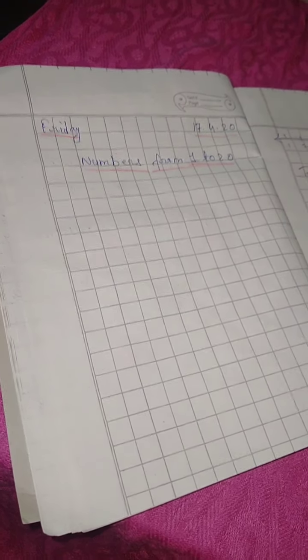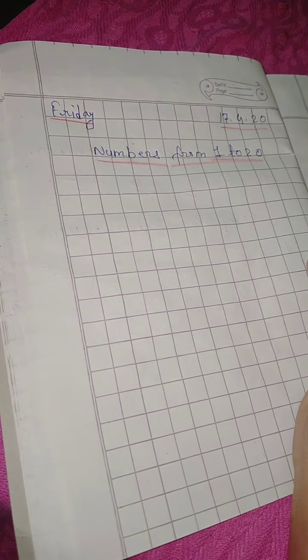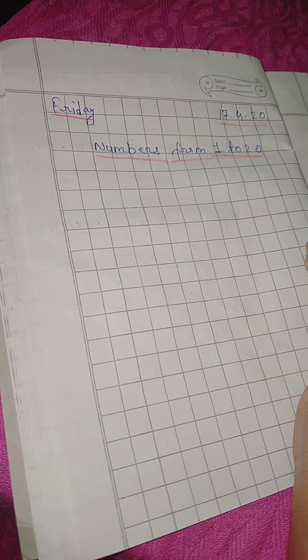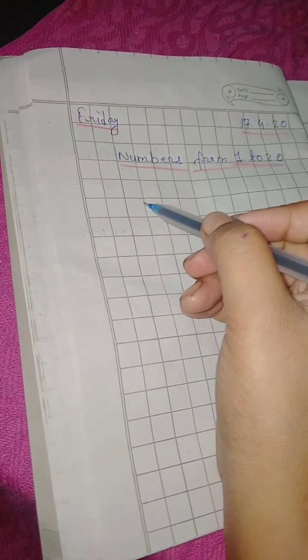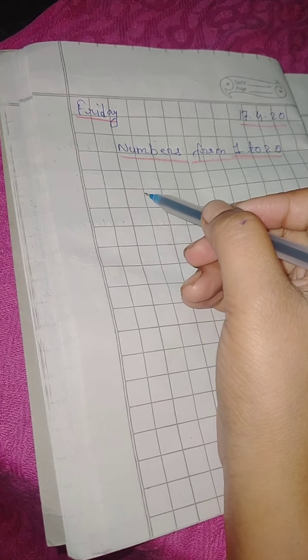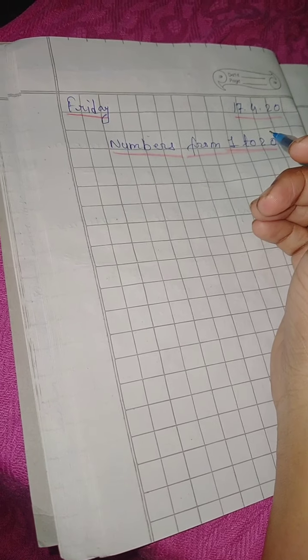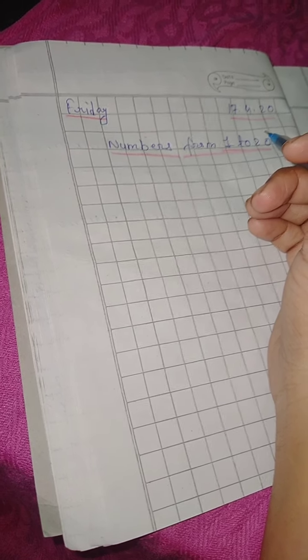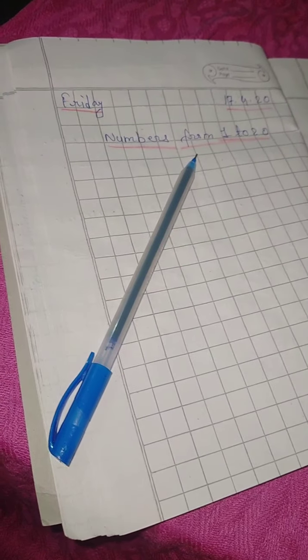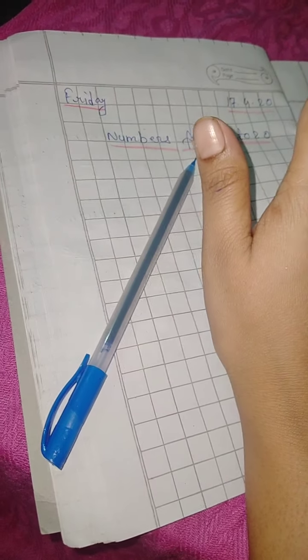Okay students, your today's topic is numbers from 1 to 20. So what is a number? Number is a method of expressing things or objects in which quantity they are. For example, how many fingers do you have?